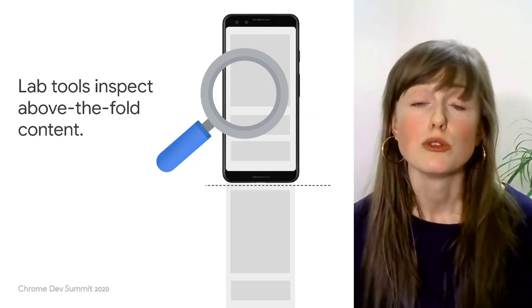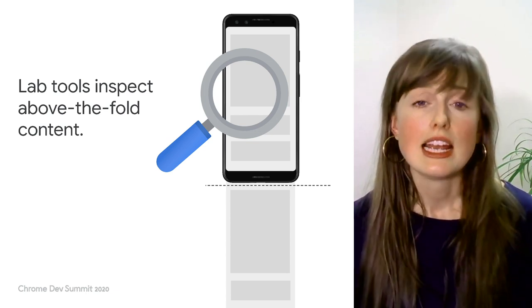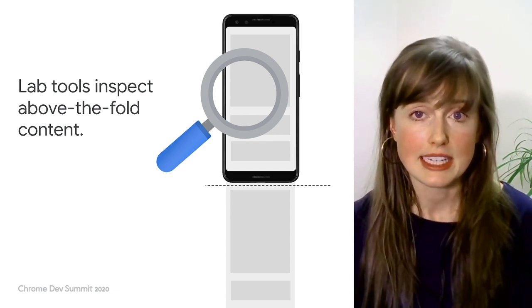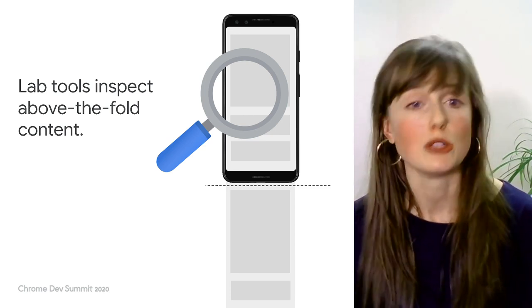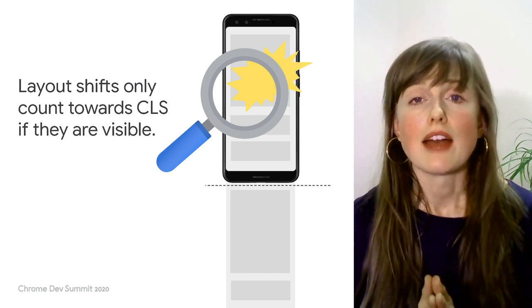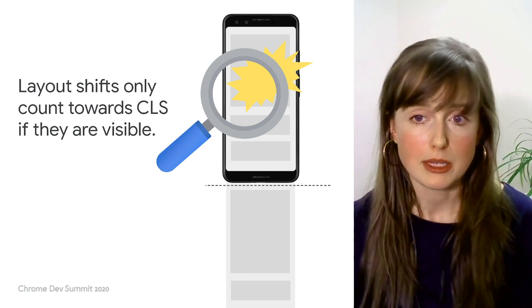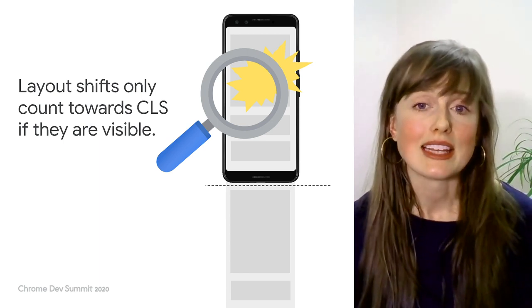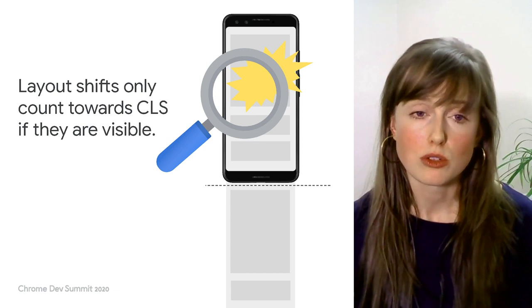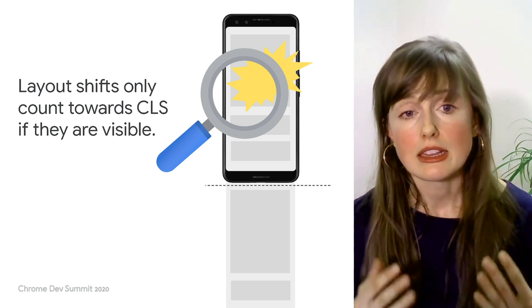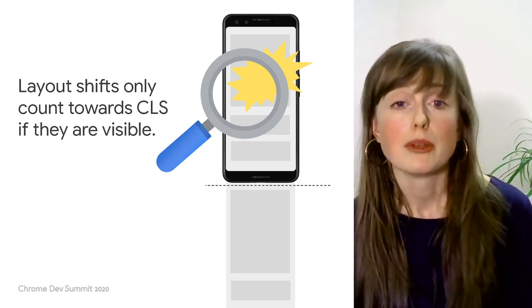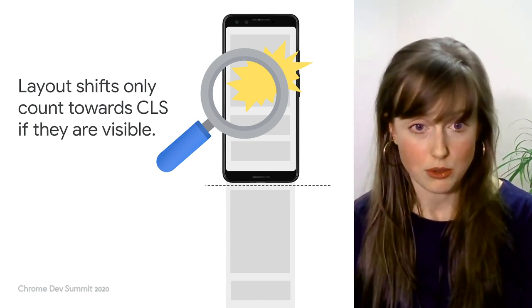Keeping with the scrolling theme, most lab tools such as Lighthouse or WebPageTest do not scroll down your page. This can be a blind spot when it comes to measuring and identifying CLS in lab environments, and it probably affects mobile a little bit more than desktop. At the same time, this blind spot might not be as big as you think. Keep in mind that layout shifts only count towards CLS if they are visible to the user — if a layout shift occurs below the fold but the user hasn't scrolled down, it's not going to count towards CLS.